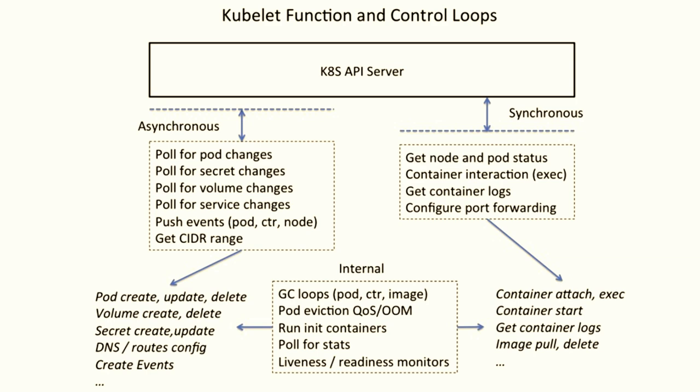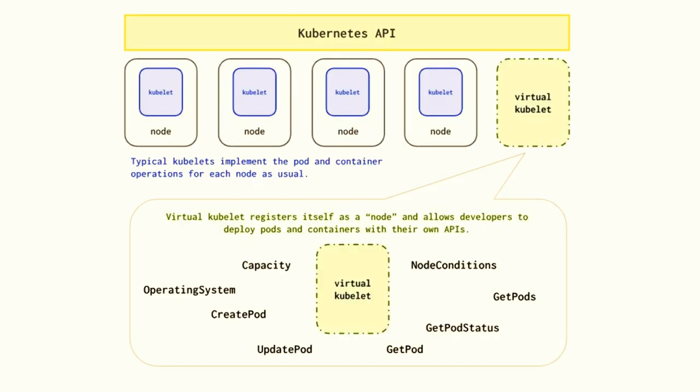If you virtualize this kubelet functionality, what capabilities can you think of? This is where the Kubernetes APIs are — that's the master — and you have certain nodes. Basically, what is a virtual kubelet? You have nodes and it acts as one of the nodes. Virtual kubelet registers itself as a node.